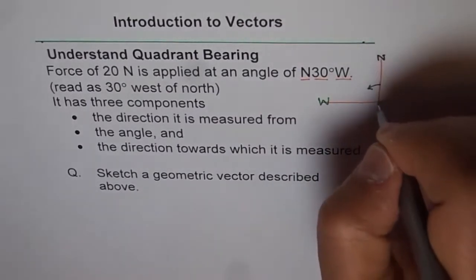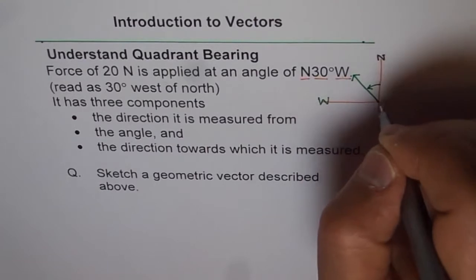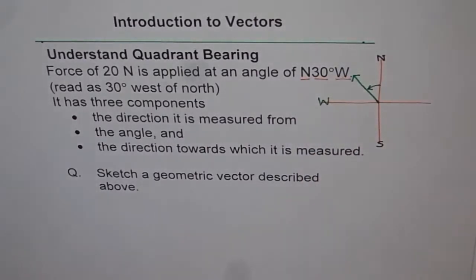So that is what the variation is. And therefore, our geometric vector will look something like this. So that is how we get the direction for a vector.